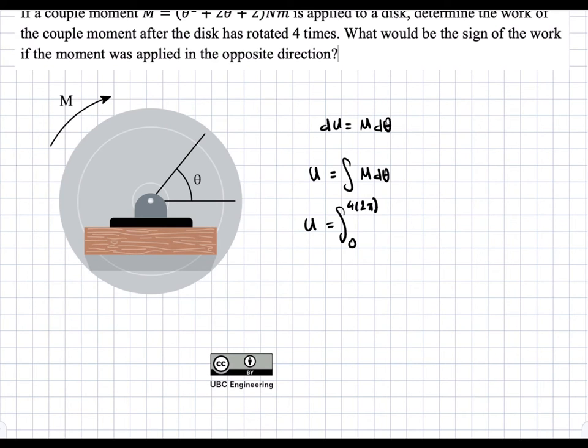Then we plug in M, which in our case is θ² + 2θ + 2, and then dθ. We're integrating this whole thing in terms of dθ.